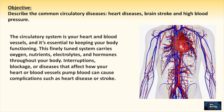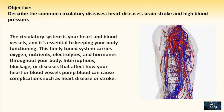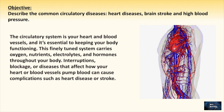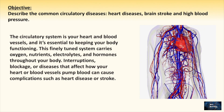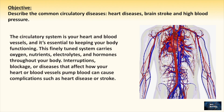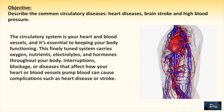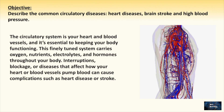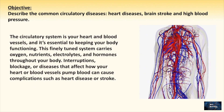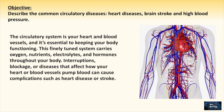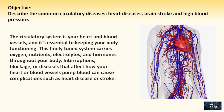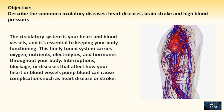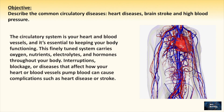As we know, the circulatory system is made up of the heart, blood, and blood vessels. The system is essential to keeping our body functioning because it is responsible for distributing oxygen, nutrients, electrolytes, and hormones throughout our body. Any interruptions, blockage, or disease affecting the circulatory system will impact our body in a negative way, so let's start and learn about it.